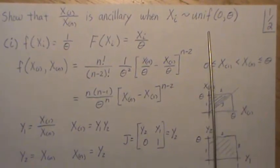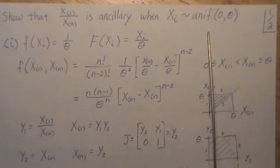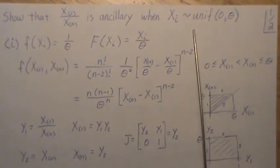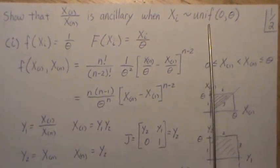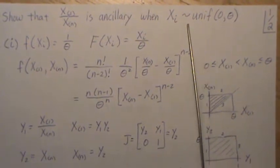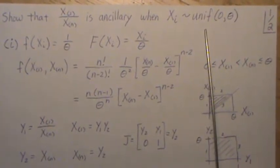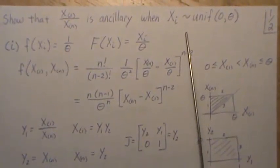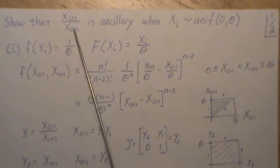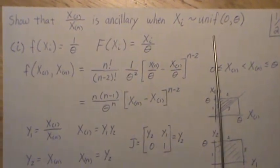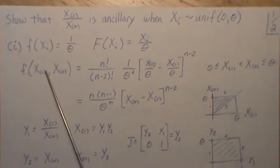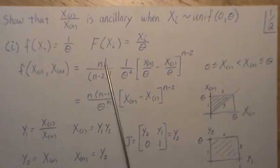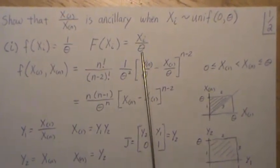Now, if you watched my previous video, just called Ancillary Statistics, we talked about a location scale distribution. And this is the family of location scale distributions. And this is what's called part of a scale family of distributions. Anyway, if you understand that aspect, you can instantly know that this is ancillary for this distribution. But we're going to derive it from scratch. So f of Xi is 1 over theta, right? So the cumulative distribution function is Xi over theta.